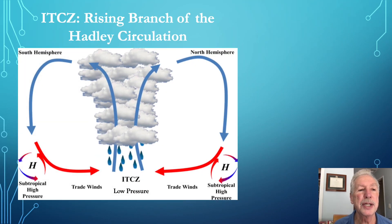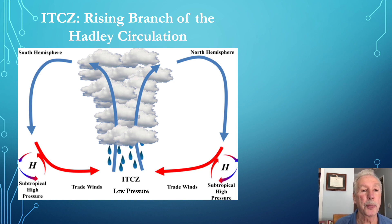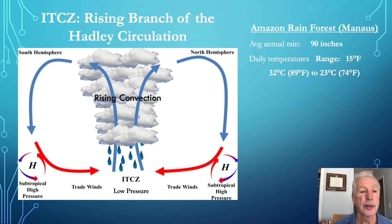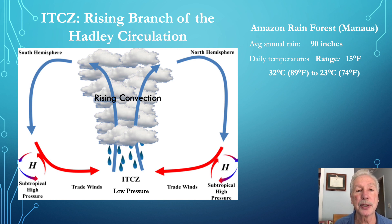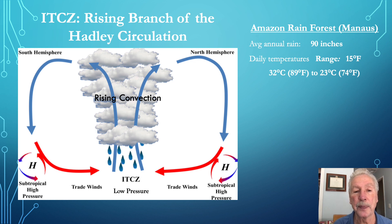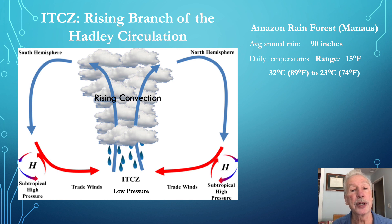The ITCZ is the rising branch of the greater Hadley circulation. Solar heating of the tropical surface causes a low pressure system and rising air currents that bring water-laden air up into the sky where it condenses, forms clouds, and then falls as precipitation. A city in the Amazon rainforest, living in the tropics, will experience 90 inches of rain a year, with a temperature range of just 15 degrees, from a daytime high of 89 degrees Fahrenheit down to a nighttime low of 74 degrees.